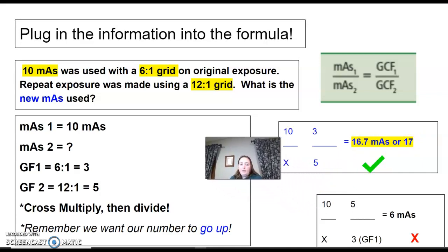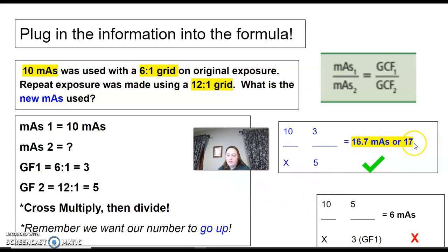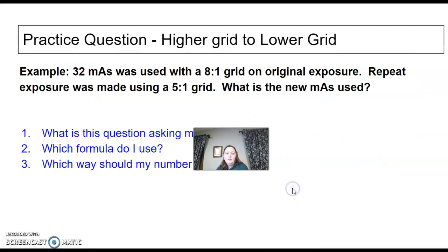So that number went up, right? We went from 10 mAs to 17. If you put your numbers in the wrong spot, so I flipped them for this one, our number went down to 6. So say you have multiple choices. If you have four answers, how many of them are going up from 10? You probably could knock out 2, maybe 3, and then you don't even have to do your math. If there's only one that is higher than 10, it's got to be it.